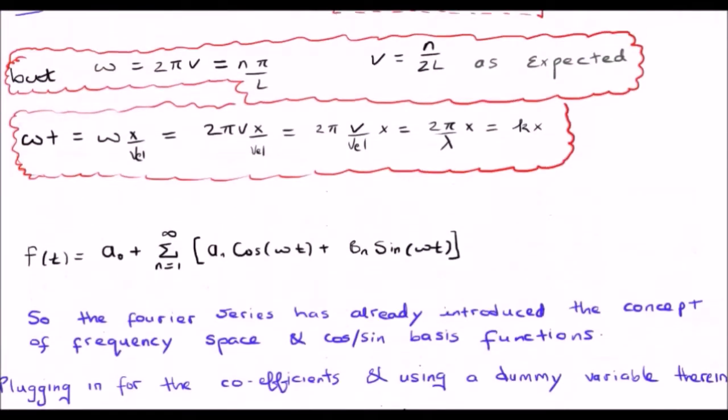How do we start deriving the Fourier transform? Let's start with the Fourier series in the time domain, using omega instead of k. Omega is 2π times the linear frequency. The Fourier series has already introduced the concepts of frequency space and cosine and sine basis functions. What we must do now is plug in for the aₙ's, bₙ's, and a₀.